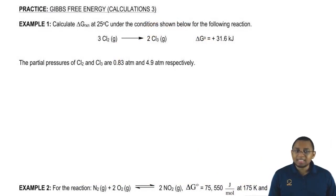In example 1, it says calculate delta G of reaction. You'll notice that there isn't a small circle on top, meaning that this is under non-standard conditions. Calculate delta G reaction at 25 degrees Celsius under the conditions shown below for the following reaction. Here, I tell you delta G under standard conditions is 31.6 kilojoules.